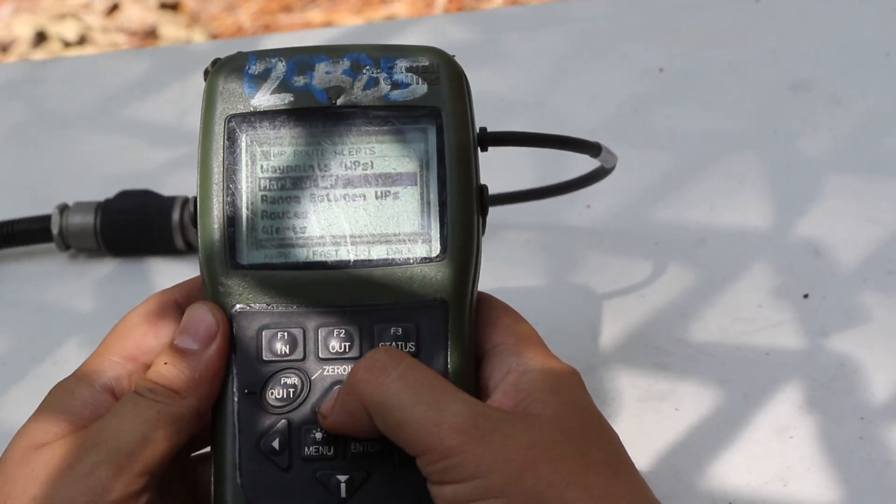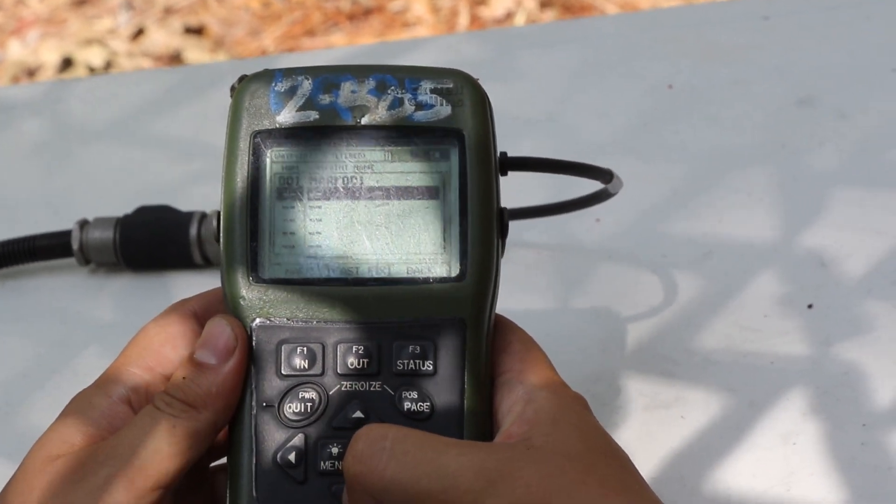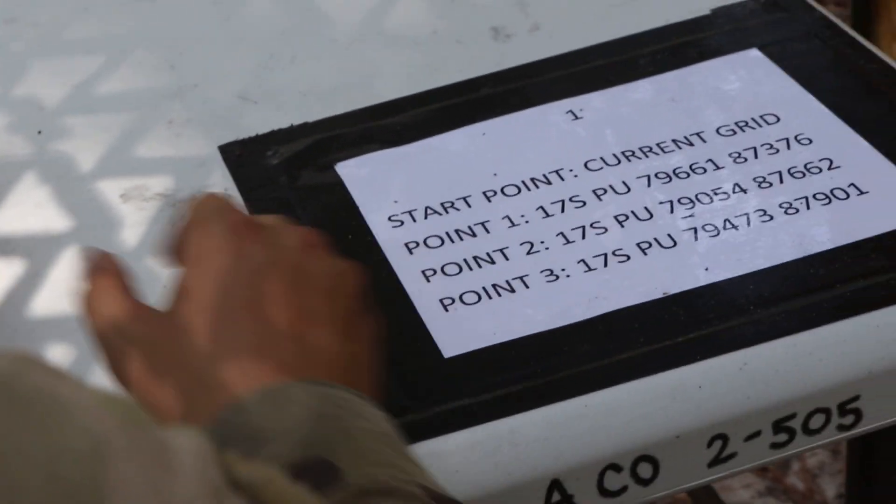Go back to routes and alerts, go to waypoints. First waypoint is marked, now I'm going to put in point 1, point 2, point 3.